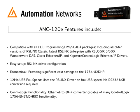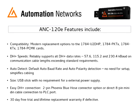Easy to set up using the RSLinx ControlLogix Ethernet driver. The most economical on the market, providing significant cost savings over the 1784-U2 DHP and other competitive DH+ converters. The most modern state-of-the-art DH+ converter option in today's market, outperforming all competitors. Efficiently engineered for fast throughput providing 12 megabits USB full speed — no RS-232 USB conversion required. It supports all DH+ data rates of 57.6, 115.2, and 230.4 kB, with communication cable lengths exceeding standard requirements.